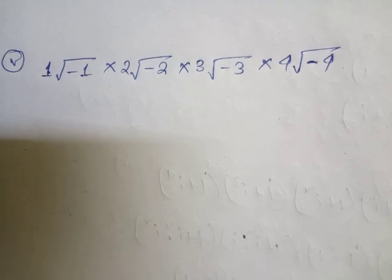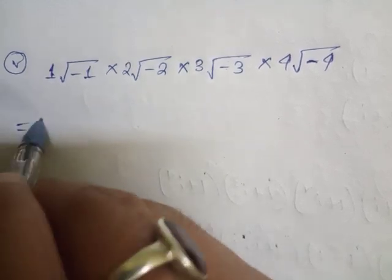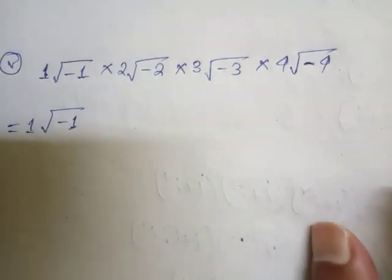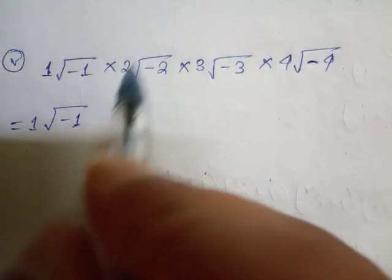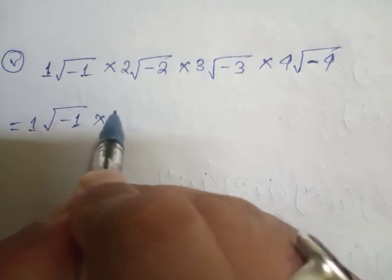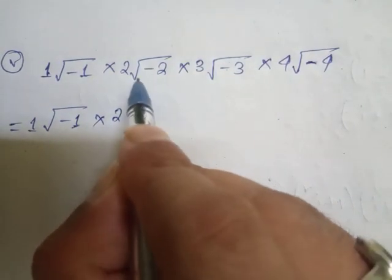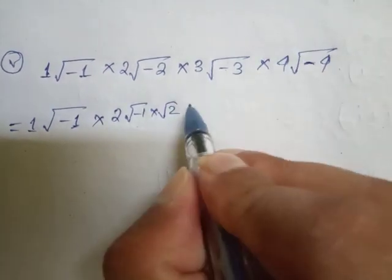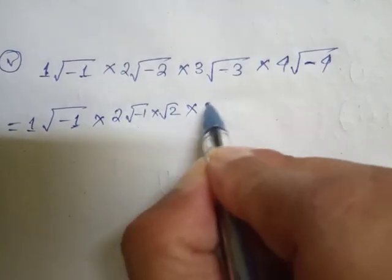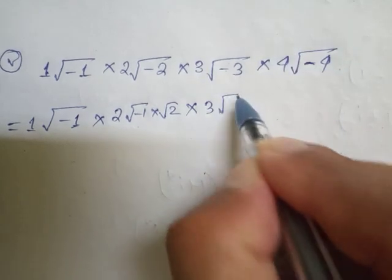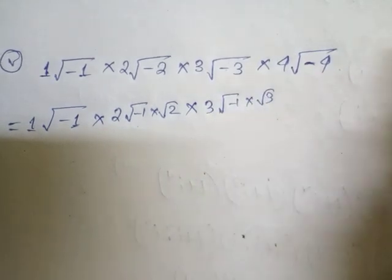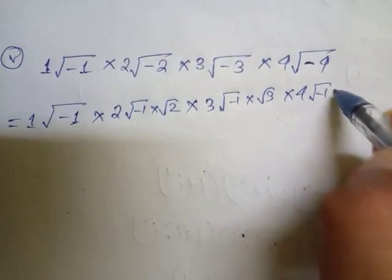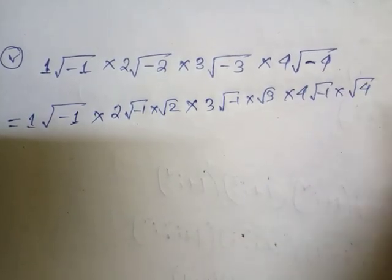Now look students, how to solve this one? First, I will try to write these whole terms into multiples of root over minus 1. So root over minus 2 can be written as root over minus 1 into root 2; into 3, there is root over minus 1 into root 3; into 4, root over minus 1 into root over 4.